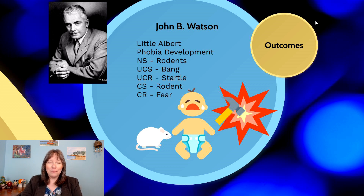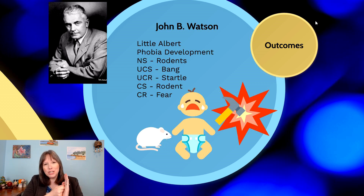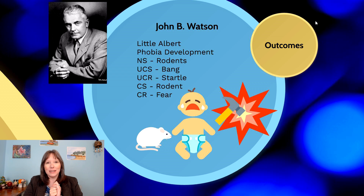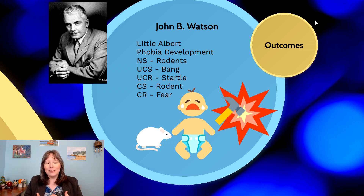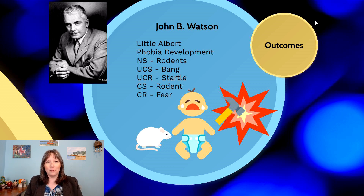Although infants are not born with a phobia of rats, they are born with a startle reflex. The unconditioned stimulus in this example was a hammer hit against a large steel pipe right behind Little Albert as soon as he was starting to pet the animal and enjoy himself. This loud bang is the unconditioned stimulus, and no training is needed for that to produce the unconditioned response of a huge startle reflex — he would jump, cry, and go into panic mode.